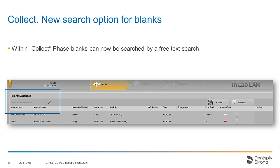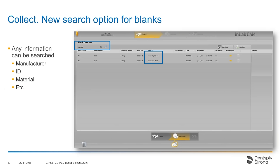We have integrated a free text search in our search window. So if you are searching for a particular puck or block and you have a long list or don't know where it is, you can type in any kind of information — whether it's a manufacturer or the ID of the disk material — and the software will show you a list of potential results based on your entry in the search window.